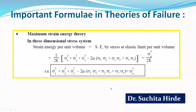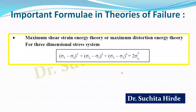Next is maximum strain energy theory, also called Beltrami and Haigh's theory. In this, we equate strain energy. The formula for strain energy in three dimensions must be remembered and equated to the strain energy at the elastic limit per unit volume. Next is maximum shear strain energy theory, also called maximum distortion energy theory or Von Mises theory. Here the stresses in three dimensions — sigma_1, sigma_2, and sigma_3 — are equated to twice sigma_e squared.